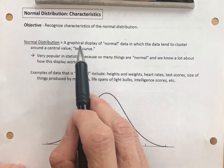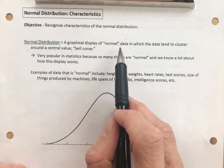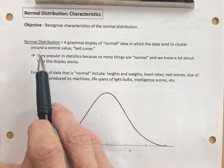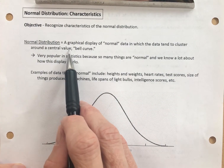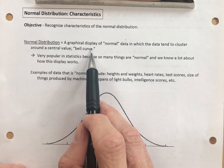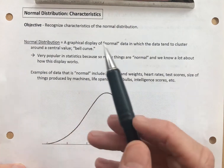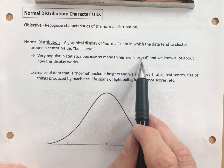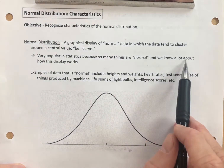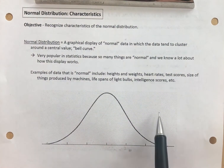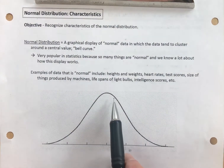It is a graphical display of normal data in which the data tend to cluster around a central value. You may have seen this graphical display also described as a bell curve. It's very popular because so many things are normal, and we know a lot about how this graphical display works. This is the normal distribution or bell curve right down here.